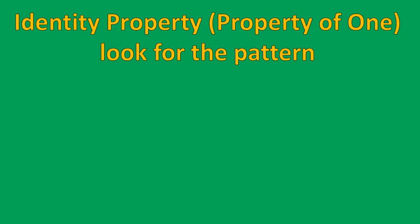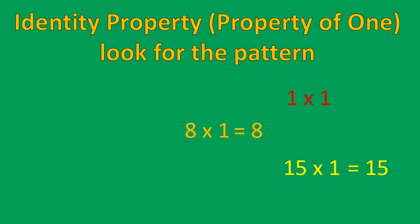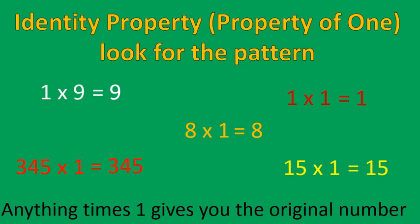Our final property is the identity property, sometimes called the property of one. Again, look for patterns: fifteen times one is fifteen, eight times one is eight, one times one is one, one times nine is nine, and three hundred forty-five times one is three hundred forty-five. Anything times one gives you the original number — that is the identity property, or the property of one.